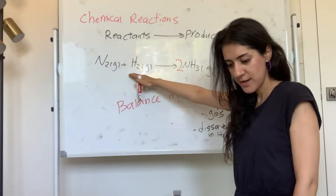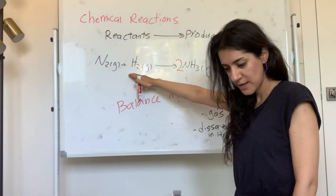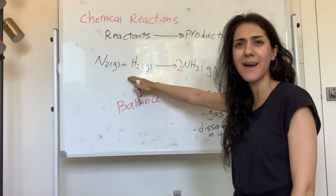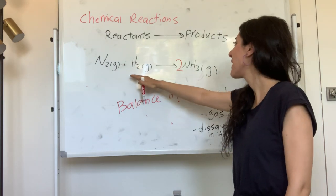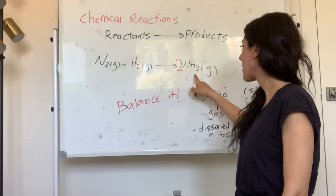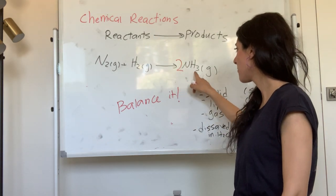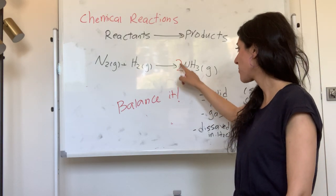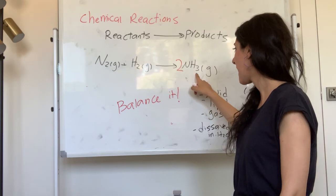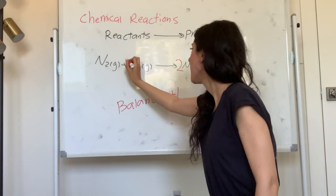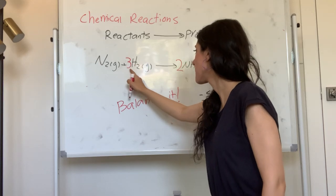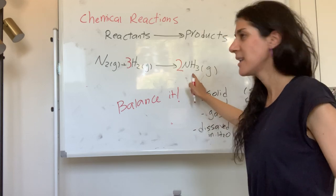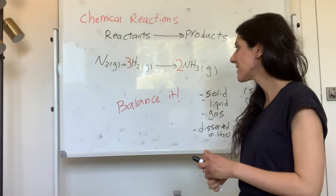How many hydrogen do you have? You have two hydrogen over here. How many hydrogen do you have on the other side? Be careful — you have six hydrogen over here because I put a coefficient of two. So I added three over here: three times two is also six. So now: two nitrogen, two nitrogen, six hydrogen, and six hydrogen. This equation is balanced.